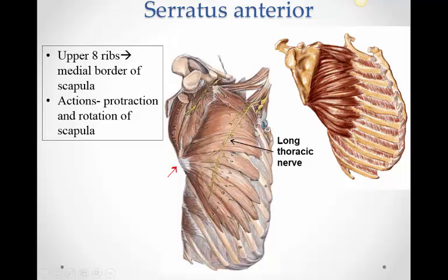It passes along the side wall and deep to the scapula. About one and a half digitations attach to the upper angle and five digitations attach to the lower angle — there must be a reason for this concentration at the lower angle. The remaining digitations are distributed along the medial border. So most of the digitations are concentrated along the lower angle, and the remaining distribute between the upper angle and the rest of the medial border.